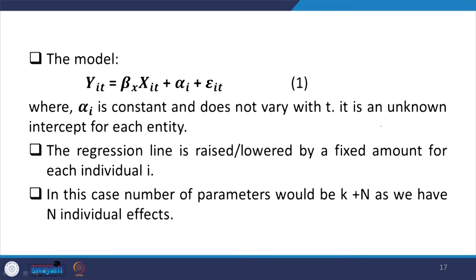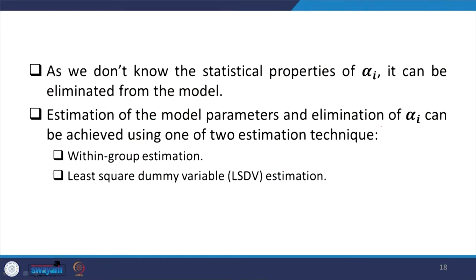Alpha_i does not vary with T, so it is an unknown intercept for each entity. The regression line is raised or lowered by a fixed amount for individual i. The number of parameters would then be K plus N, as we have N individual effects. Since we do not know the statistical properties of alpha_i, it can be eliminated from the model. If we can eliminate alpha_i, we are assured with the standard calculation. Estimation of model parameters and elimination of alpha_i can be achieved using one of two estimation techniques.